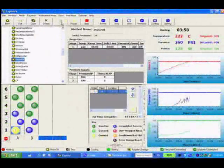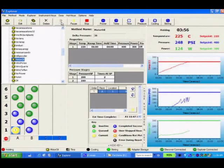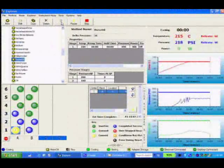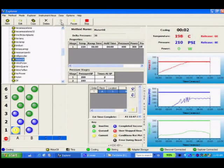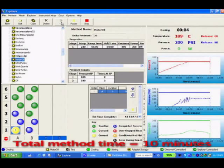While the digestion temperature is held, CEM's patent-pending Activent technology safely vents away any excess gaseous byproducts at user-defined pressures if necessary.